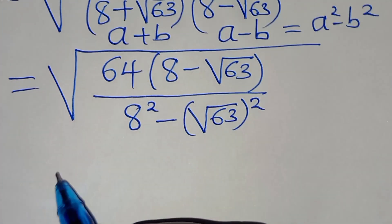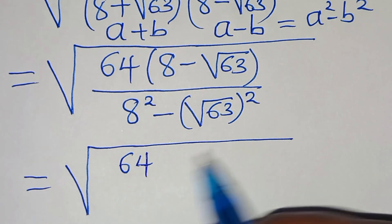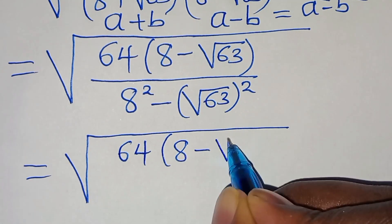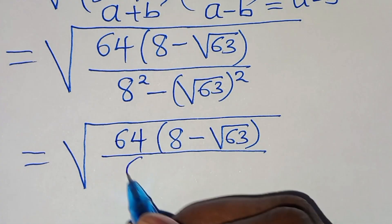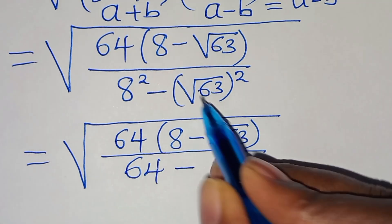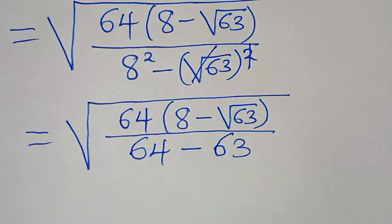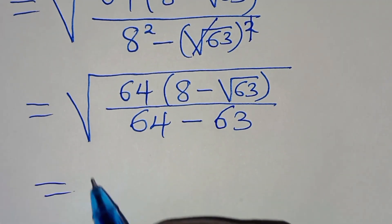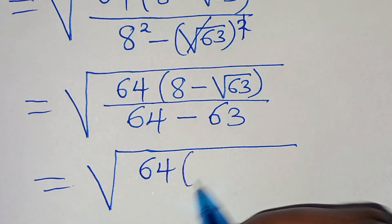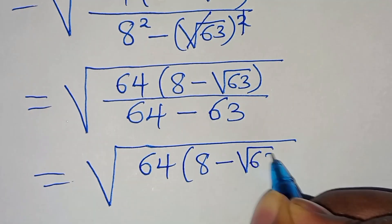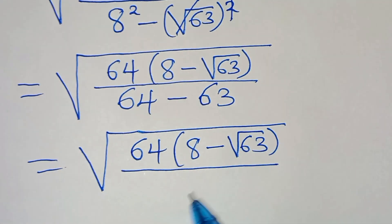Now here we have square root of 64 multiplied by 8 minus square root of 63, divided by 8 squared minus square root of 63 to the power of 2. This gives us 64 minus 63, which equals 1.